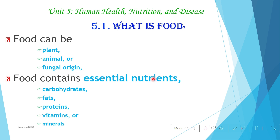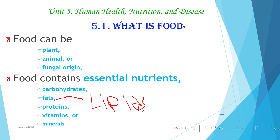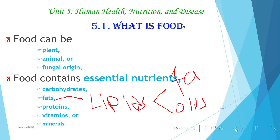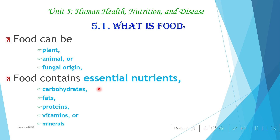Food contains essential nutrients. Nutrients are the chemical substances found in food, or from which food is produced. Food contains essential nutrients such as carbohydrates, fats, proteins, vitamins, and minerals. Fats can be grouped as lipids — including both fats and oils. These are the essential nutrients found in food.